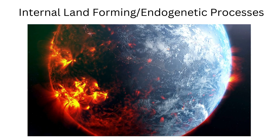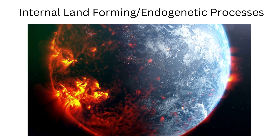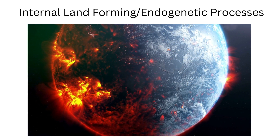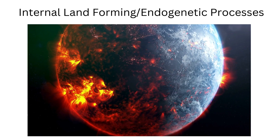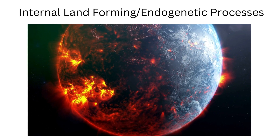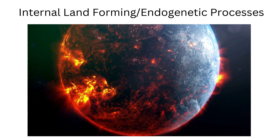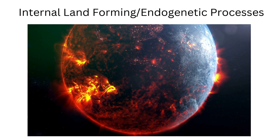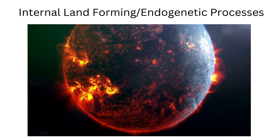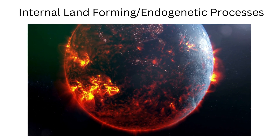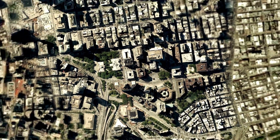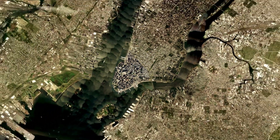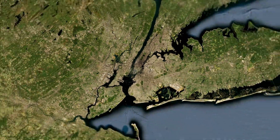Internal land forming endogenetic processes — definition. Deep within the earth, hidden from sight, powerful forces are constantly shifting and shaping the land we walk on. These unseen sculptors are known as internal land forming processes, or endogenetic processes. These forces carve mountains, crack open valleys, and even spew molten rock to create new land through their dynamic movements within the earth's interior.